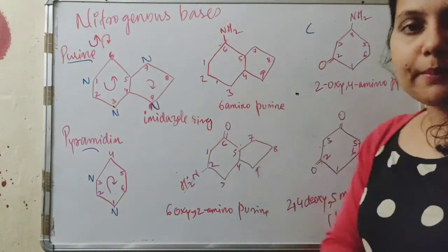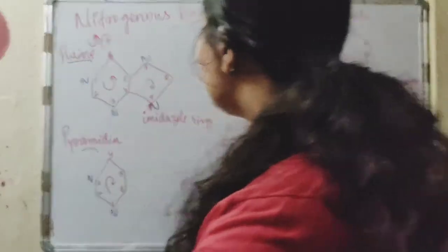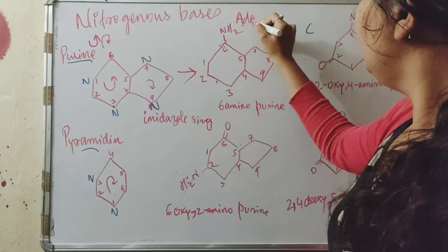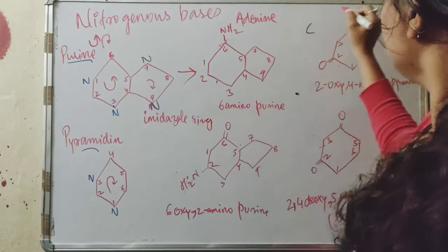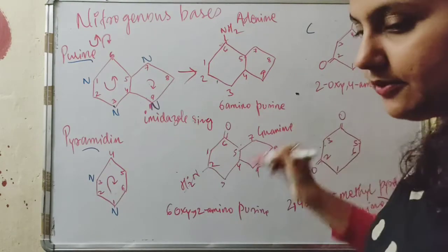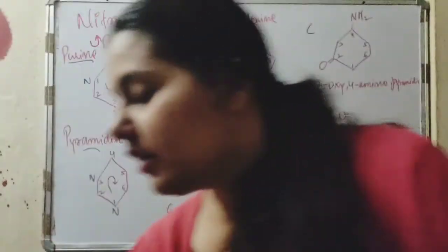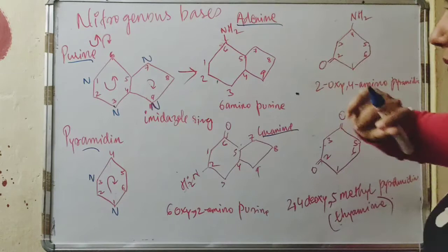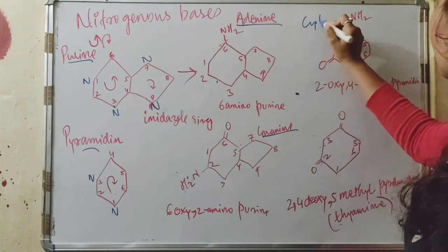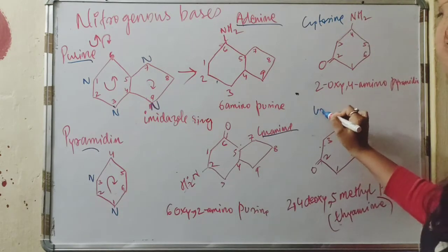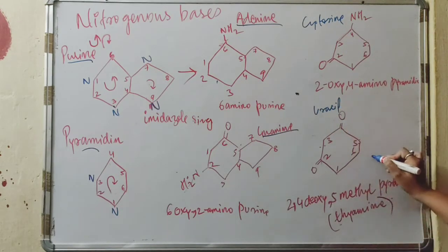Coming to the bases: purine has two bases — adenine and guanine. The other category is pyrimidine, which has cytosine, uracil, and thymine.